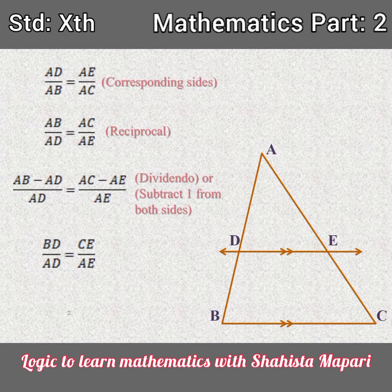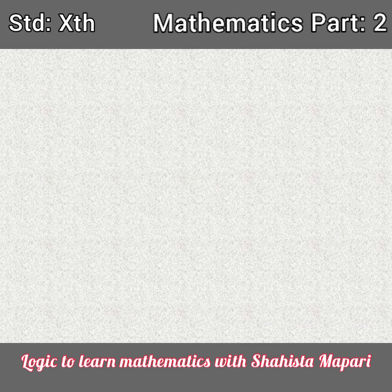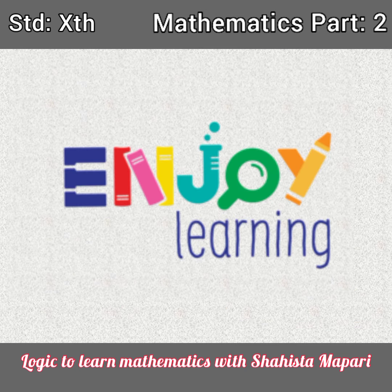Now, again taking the reciprocal of this side, AD upon BD is equal to AE upon CE. In this way, we have completed the basic proportionality theorem. Thank you for watching my video. Enjoy learning.